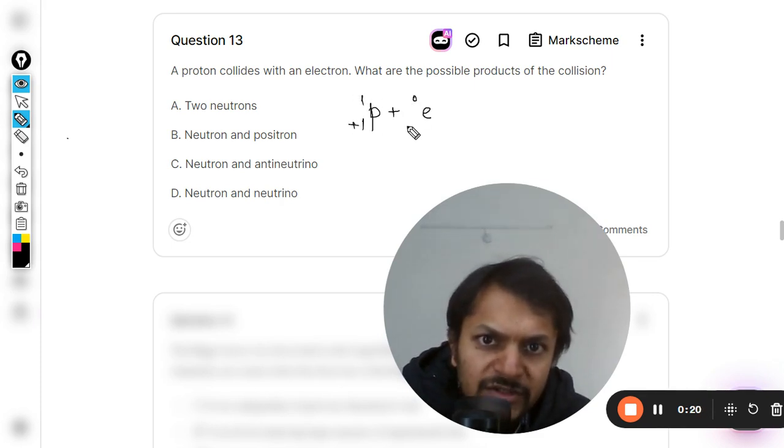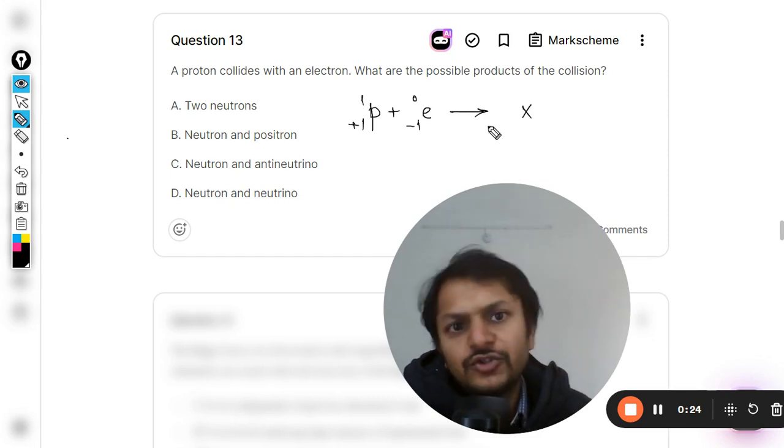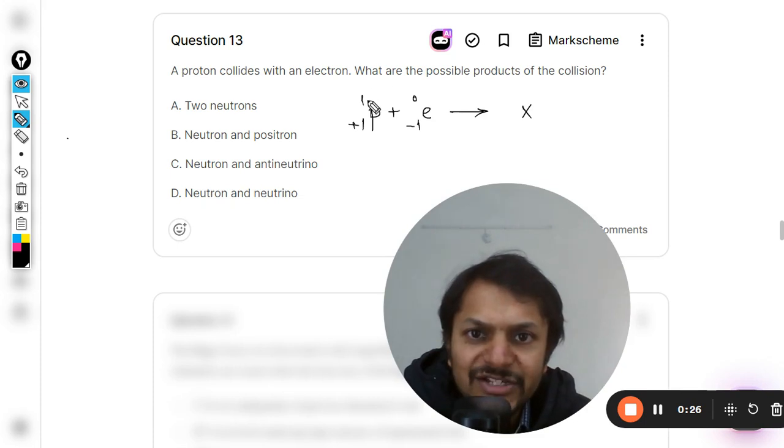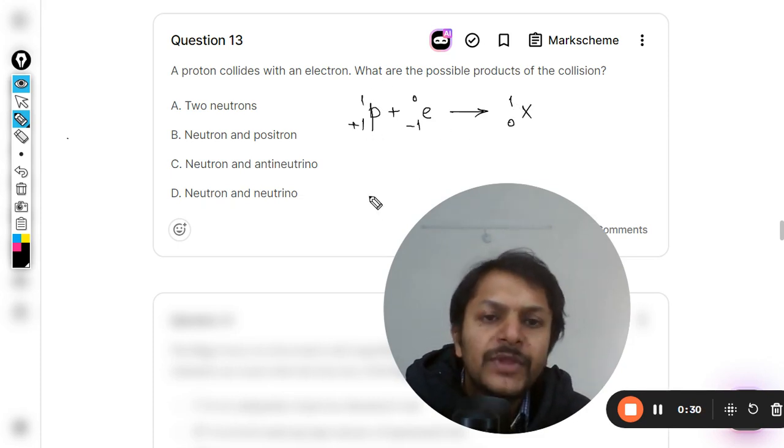And for the electron, mass number is zero, the charge is negative one. So it will give rise to something like a particle X where the mass number will be one and the charge will be zero. And what is that kind of particle? It is a neutron.